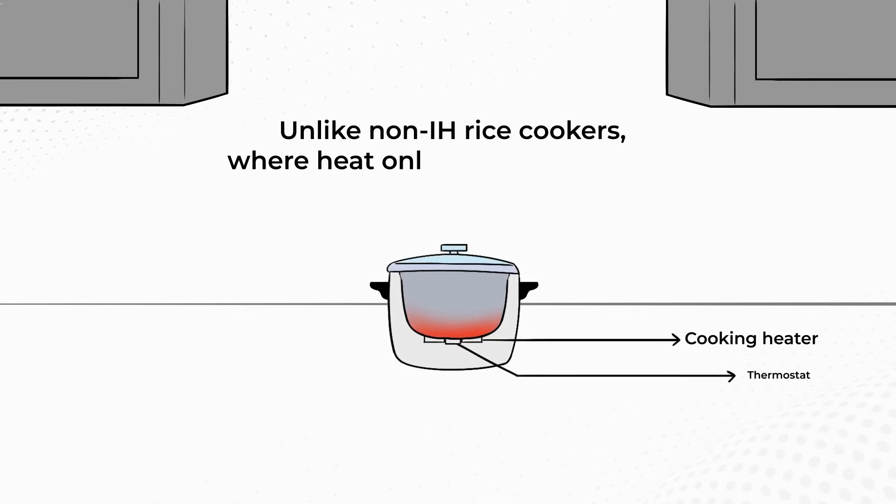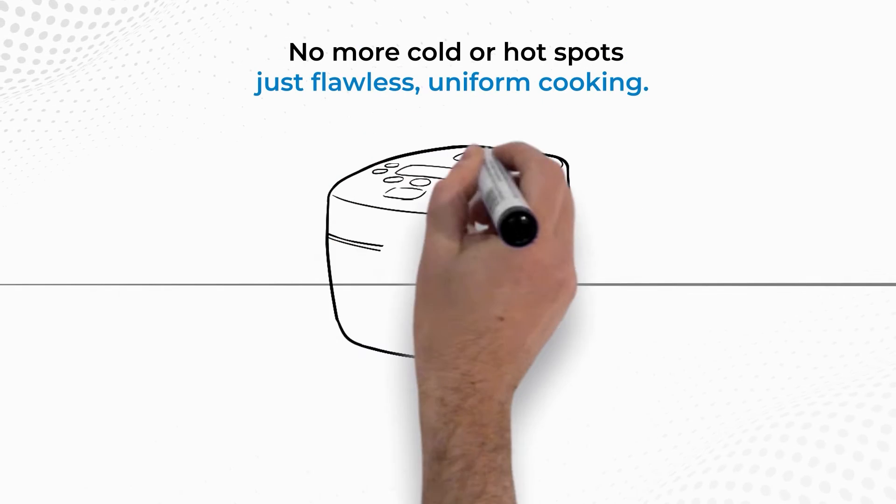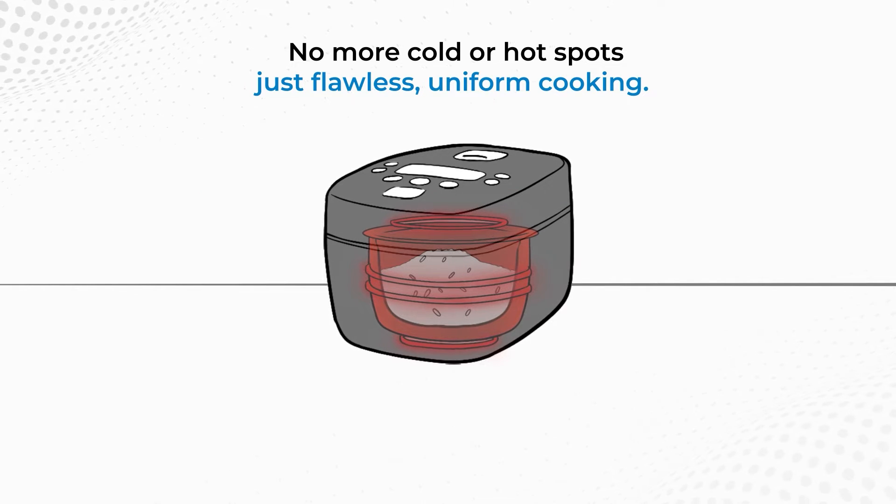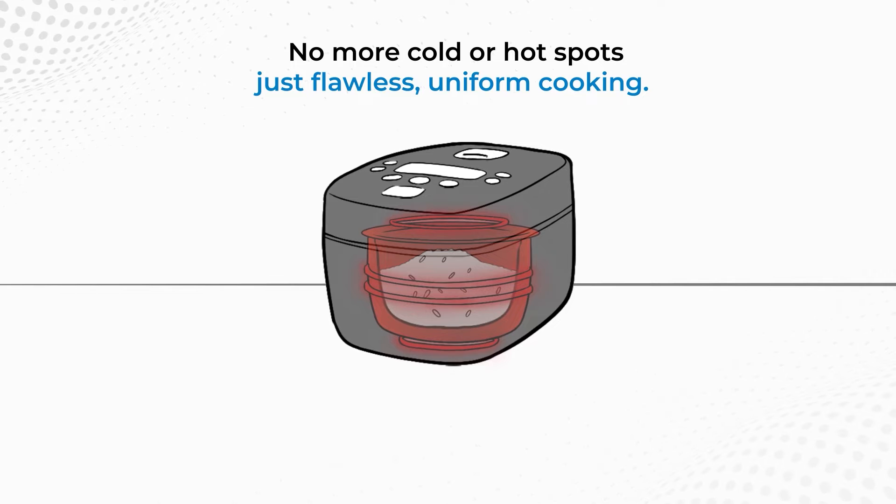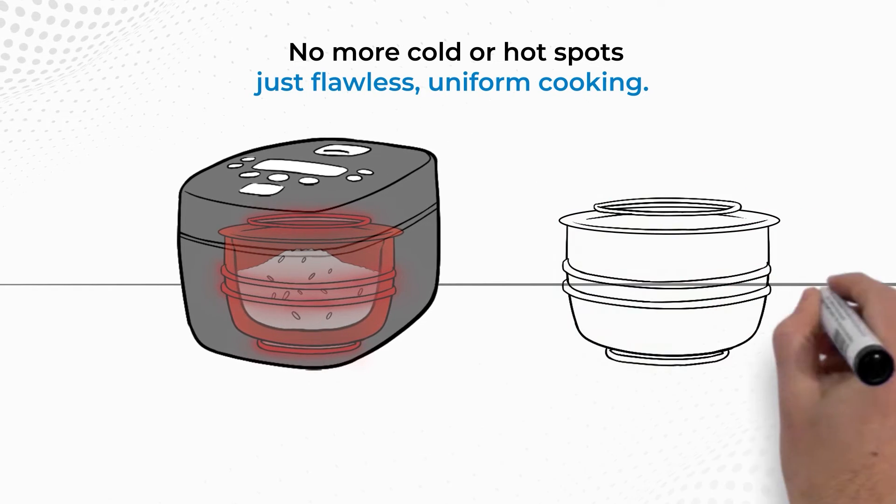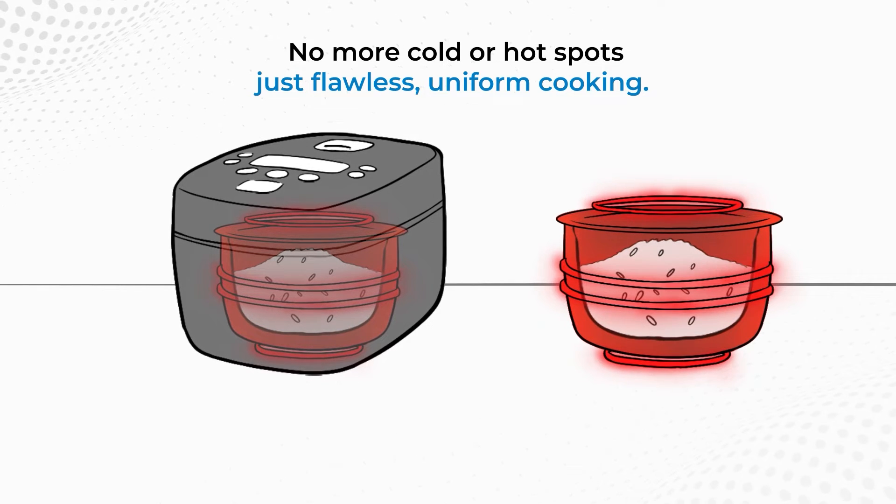Unlike non-IH rice cookers, where heat only comes from below, induction heats the entire surface of the pan evenly from within. No more cold or hot spots, just flawless, uniform cooking. The rice grains receive heat from all sides for consistent results every time.